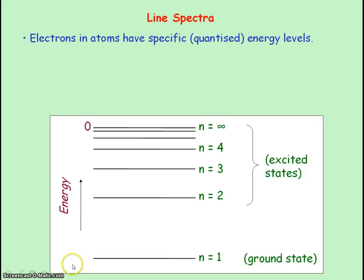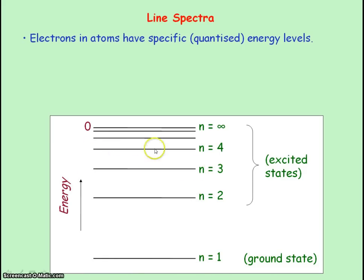This diagram shows the quantized energy levels for an electron in an atom. n equals 1 represents the lowest energy an electron can have — we call this the ground state. The lines represent the energy levels that are allowed for an electron in an atom. The electron is not allowed any energy between energy levels, but only these specific energies.